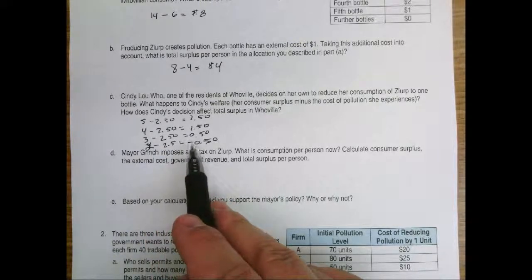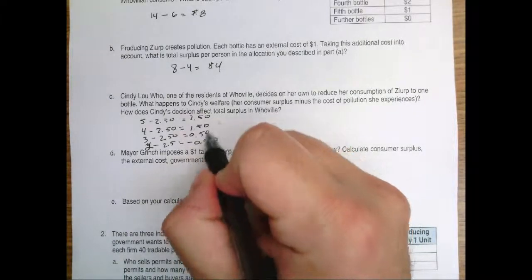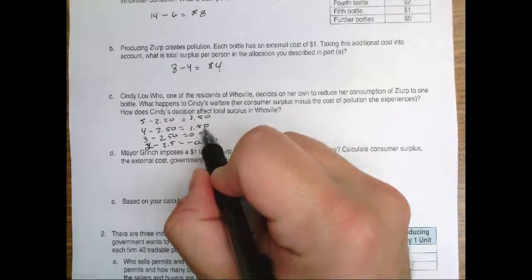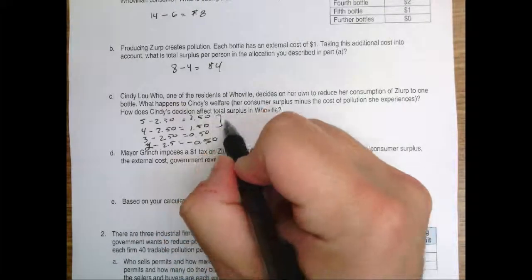So each Whovilian is actually experiencing a total surplus of $2.50 plus $1.50 plus $0.50 minus $0.50. So really, they get a total surplus here of $4.00.